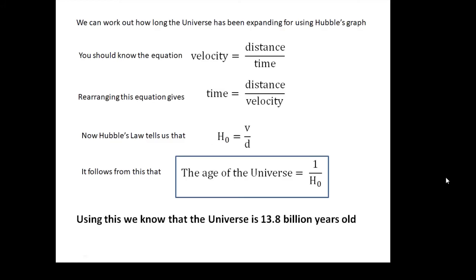Now from this graph and from the value of the Hubble constant, we can work out something very interesting. If you can follow the maths, what you should remember is that the age of the universe is one over the Hubble constant. So one divided by the Hubble constant tells us the age of the universe. From this we know that the universe is about 13.8 billion years old. That is the age of the universe.